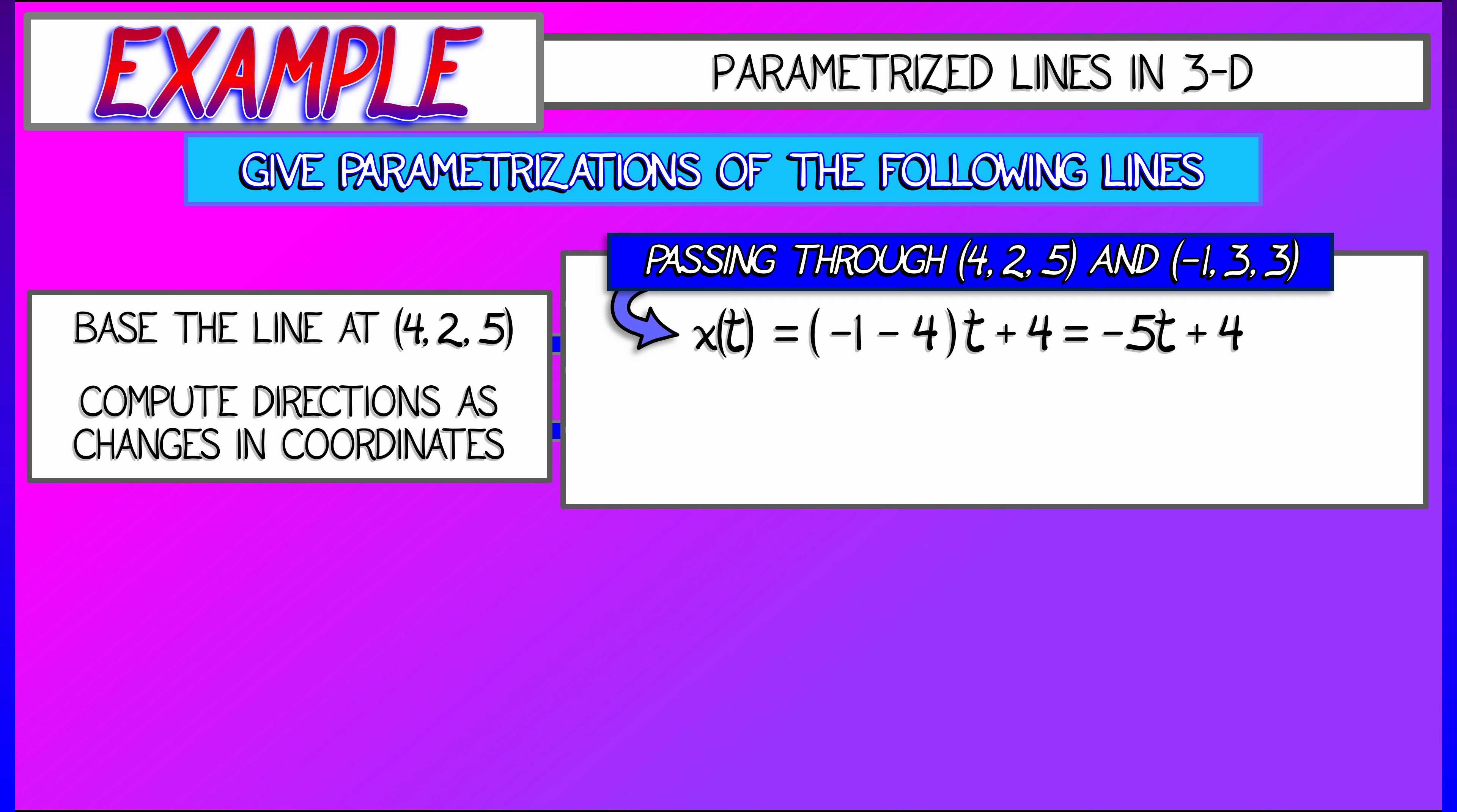That simplifies to negative 5t plus 4. The same for y. y of t is the change in y, 3 minus 2, times t, plus the initial y coordinate, 2. That simplifies to t plus 2. And lastly, the same thing with z of t, simplifying to negative 2t plus 5. This, together, gives me a parameterization of a line. Check and make sure that when t equals 0, you get the first point, 4, 2, 5. Now, what's the t value that gives you the second point, negative 1, 3, 3?